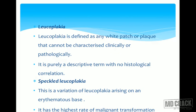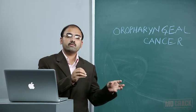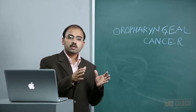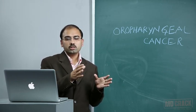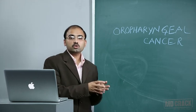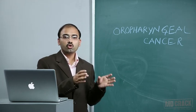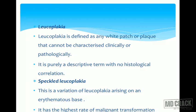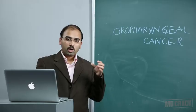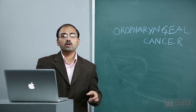Leukoplakia is defined as any white patch or plaque that cannot be characterized clinically or pathologically as any other specific lesion. Non-specific whiteness is labeled as a specific premalignant lesion — when it is white, it is called leukoplakia. It is purely a descriptive term with no histological correlation. Speckled leukoplakia is a variation of leukoplakia arising on an erythematous base.